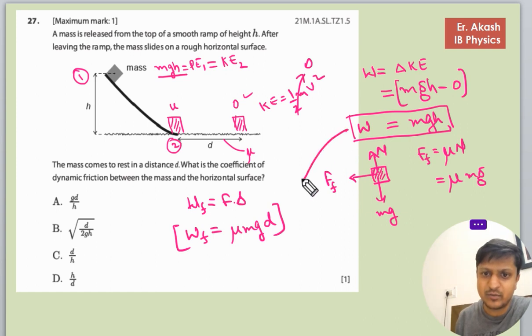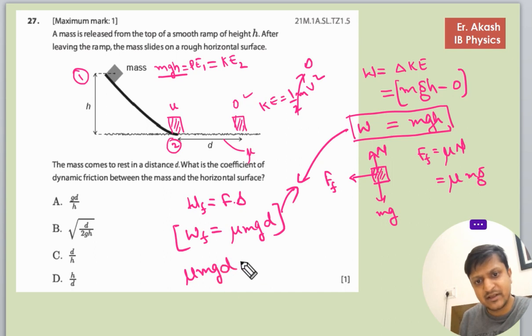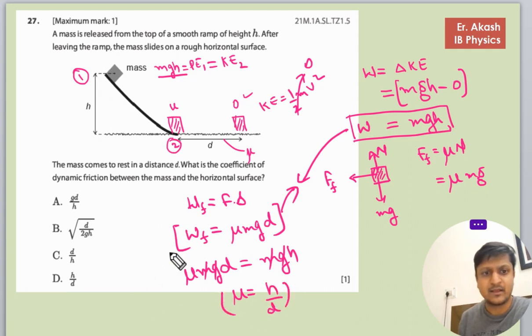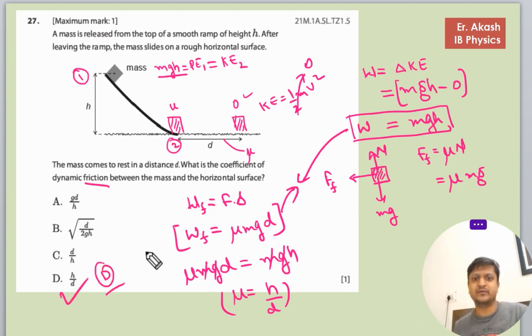Now we will equate both these equations: mu mgd equals to mgh. m cancels with m, g cancels with g, and mu becomes h upon d. So we have to find the coefficient of dynamic friction, that is h by d. The d option is the right option.